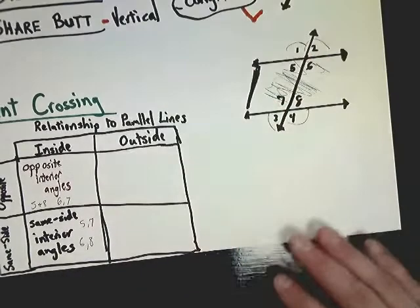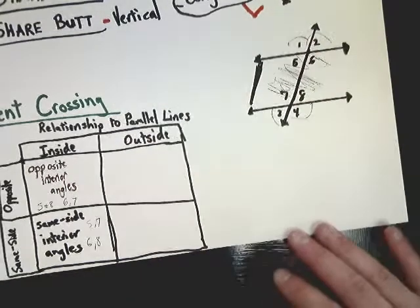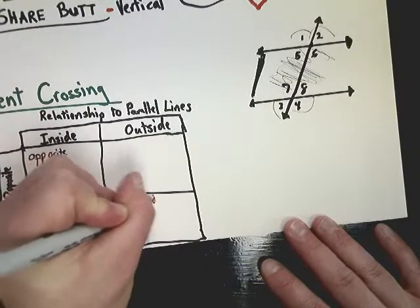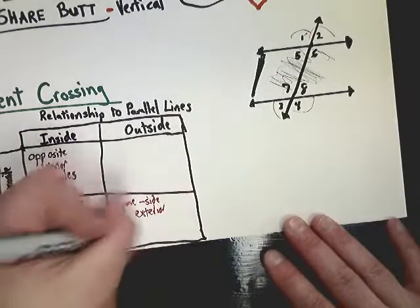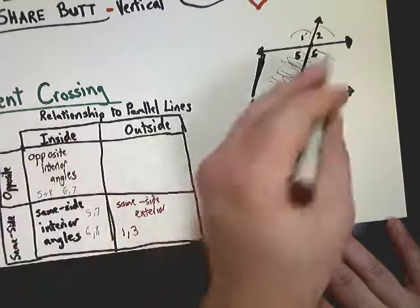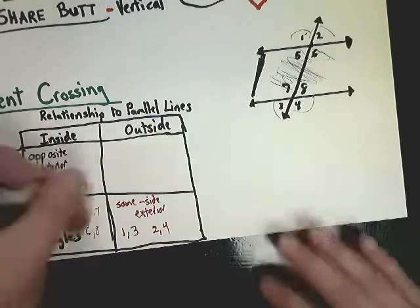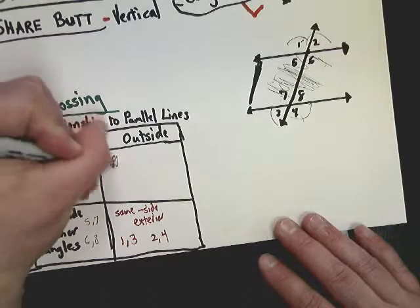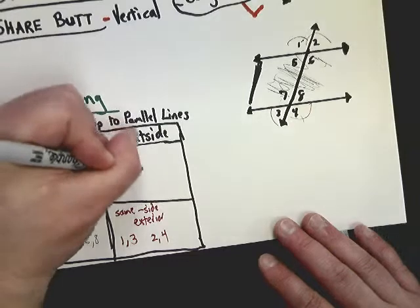We can also look at angles outside the parallel lines — that's 1, 2, 3, and 4. If two exterior angles are on the same side of the transversal, like 2 and 4, they are same-side exterior angles, also called consecutive exterior angles. If they're on opposite sides, they are opposite exterior angles.